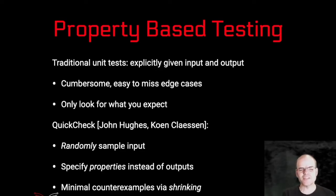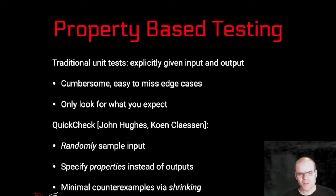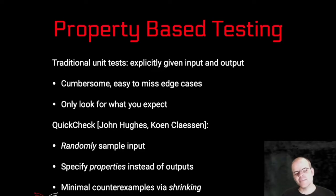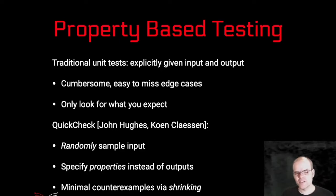There is another technique called shrinking: if you have generated test data and found some example that violates one of your properties, then you know you found a bug. But you don't know what exactly the bug is — you just know that for this arbitrarily complex input data, some property is violated. Shrinking allows you to systematically move to simpler input data and find the minimal counterexample. Once you have a minimal counterexample, it's most of the time very easy to see where the problem lies. So that helps enormously not only in finding bugs but also in correcting them.